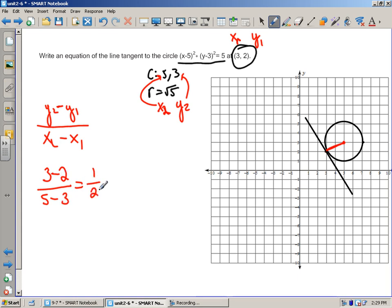Now what we need to do is we need to figure out what's the slope of the tangent. Well all we're going to do is we're going to invert the slope and take the opposite sign.